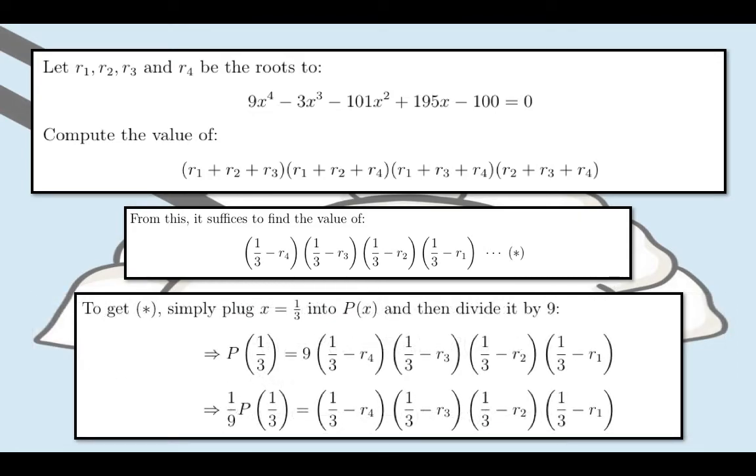Now, we can rearrange the term since multiplication is commutative. Now all we have to do is divide both sides by 9, so the expression star is actually equal to 1 ninth the value of P of 1 third.